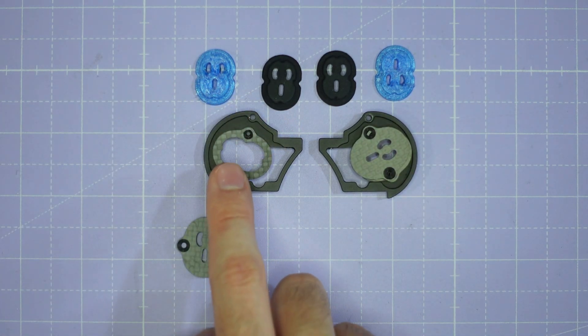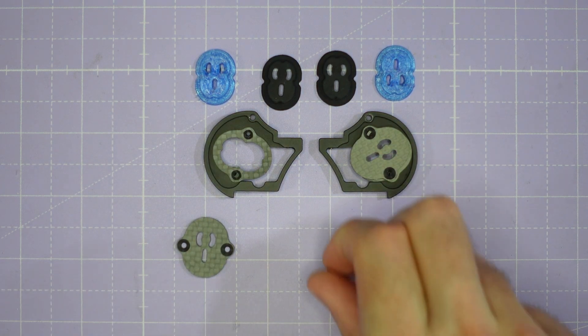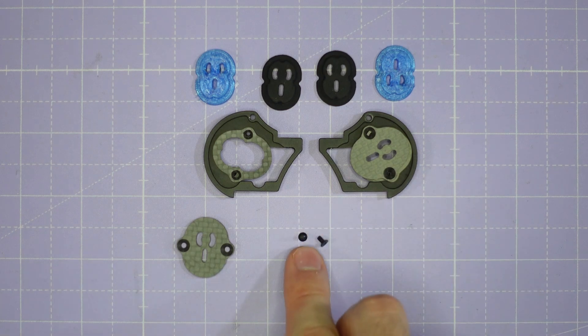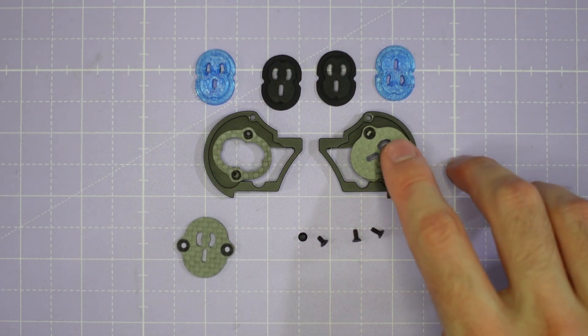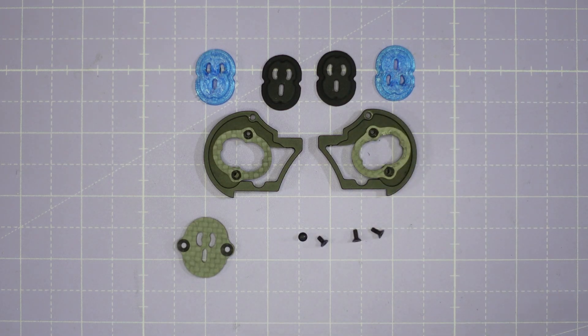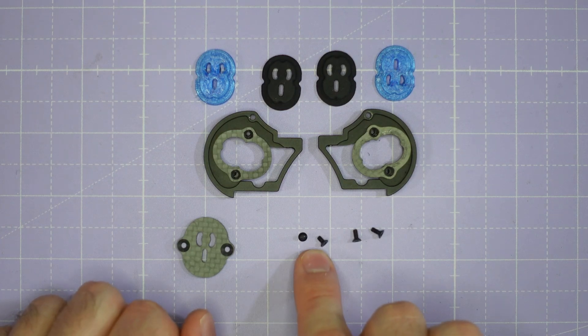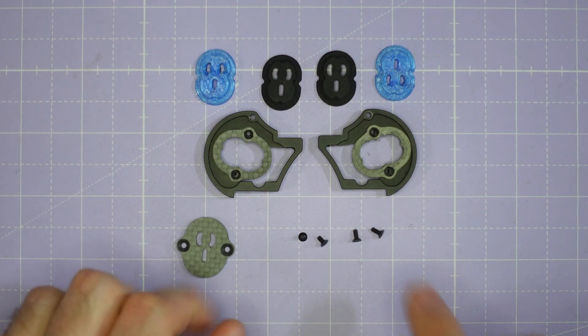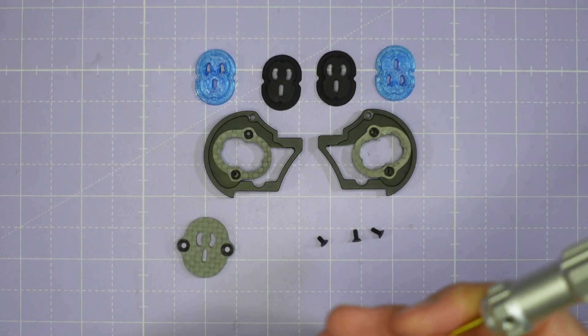Depending on whether you're using one plate or both plates you're going to want to use either the M2 by 4mm countersunk screws or the M2 by 6mm countersunk screws for the hard mount option. I'm going to be building for the DJI O3 camera so I'm going to be using the soft mount camera plates and the M2 by 4mm countersunk screws. Once you have this lined up go ahead and screw in the carbon fiber plates.